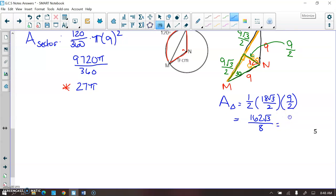162 divided by 2 is 81, and then I leave my root 3 alone. So now all over 8 divided by 2 is 4. So my area of my triangle is 81 root 3 over 4.